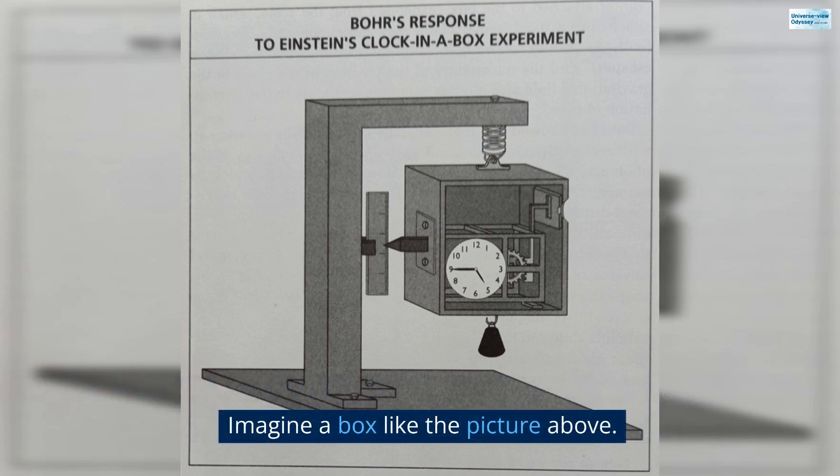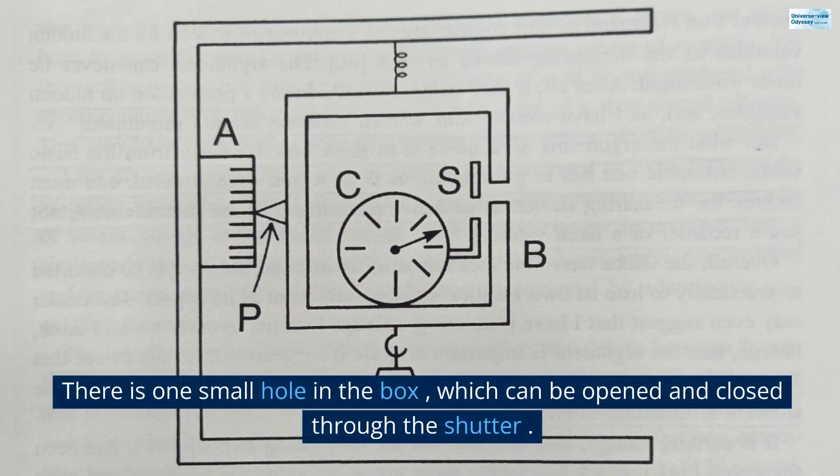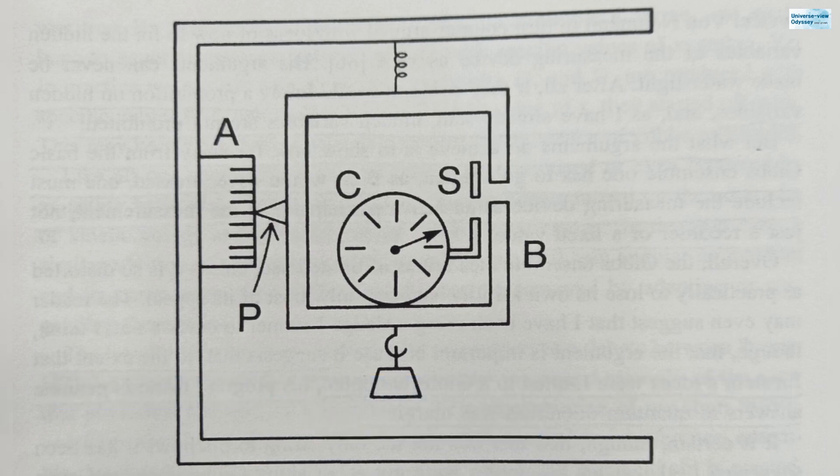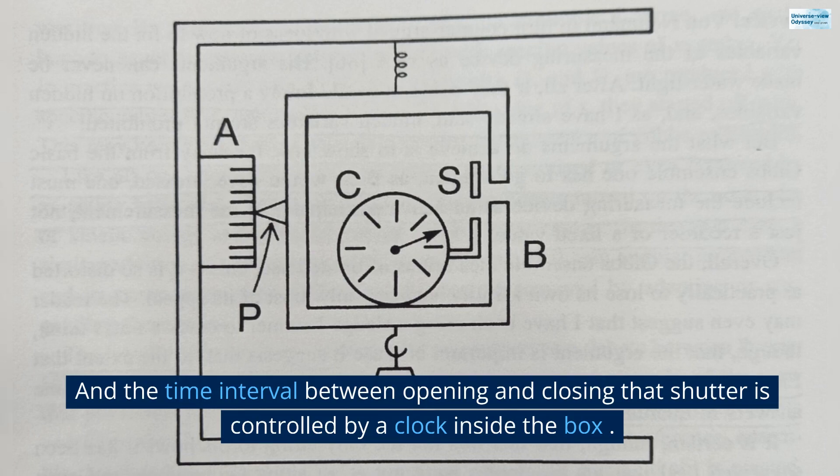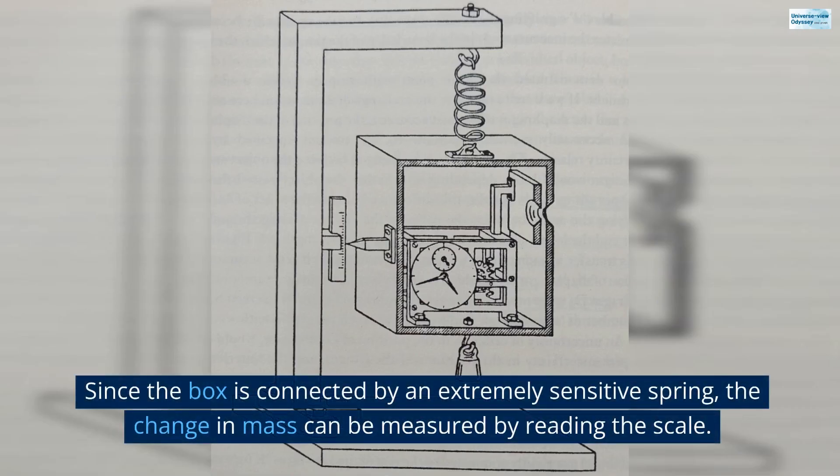Imagine a box like the picture above. There is one small hole in the box, which can be opened and closed through the shutter. And the time interval between opening and closing that shutter is controlled by a clock inside the box. Since the box is connected by an extremely sensitive spring, the change in mass can be measured by reading the scale.